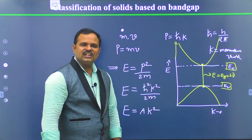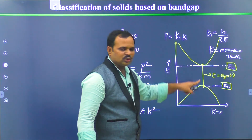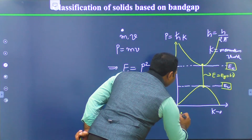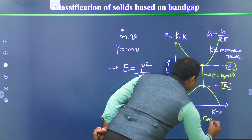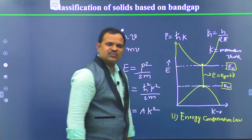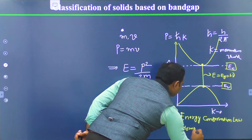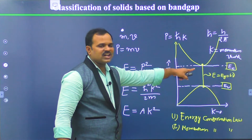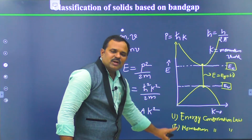Now while discussing all these things, the interesting question is: whenever an electron is de-exciting from a higher energy level to a lower energy level, two things must happen. First, its energy should be conserved — it has to follow the energy conservation law. Second, its momentum also must be conserved. Whenever an electron takes a transition from a higher energy level to a lower energy level, both energy and momentum should be conserved.